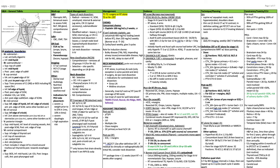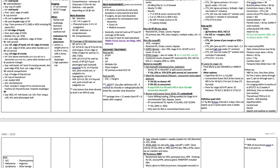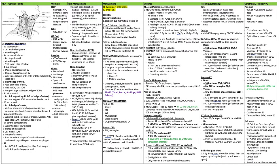The only lesions that drain directly to level 5 are the nasopharynx and the scalp. In terms of management, T1 to T2 tumors get surgery or radiation alone, and T3 or node-positive get a combination of chemoradiation. Concurrent chemotherapy is generally cisplatin 100 mg/m² every 3 weeks, or if they can't tolerate cisplatin, cetuximab: 400 mg/m² loading dose the week before radiation, then 250 mg/m² weekly.